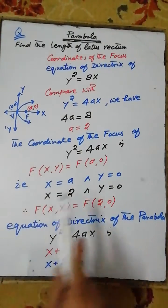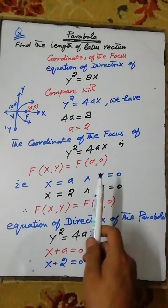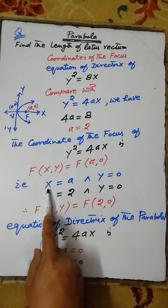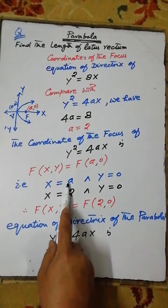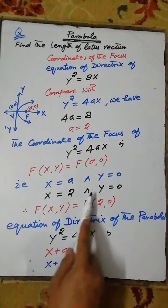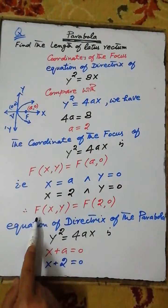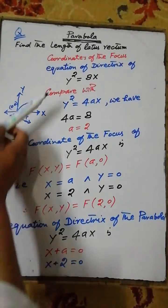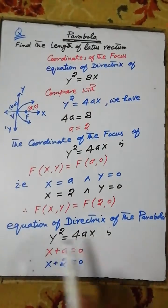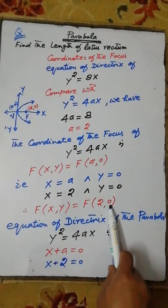According to the given condition, x is equal to a, a is equal to 2, so x is equal to 2 and y is equal to 0. That is, the coordinate of the focus of the given parabola is (2, 0).